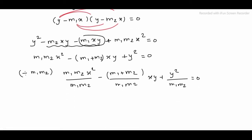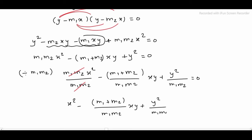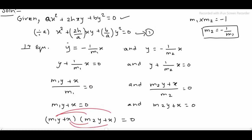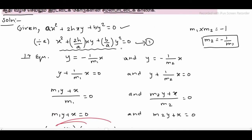After simplification, m1m2 will cancel out, leaving: x² minus (m1 plus m2) divided by m1m2 into xy plus y² divided by m1 into m2 is equal to 0. Let us assume this as equation 3. In equation 3 we will compare with the general equation — specifically equation 1.